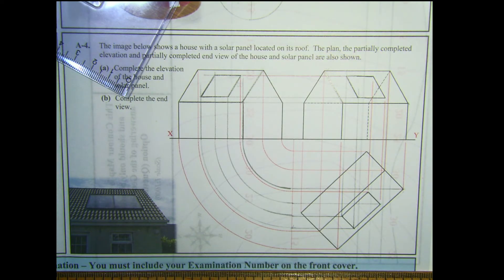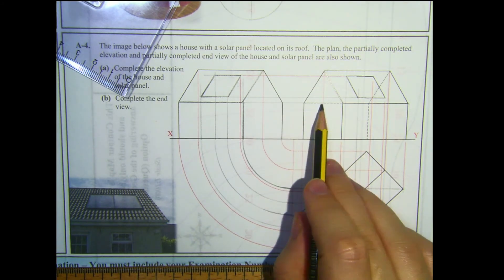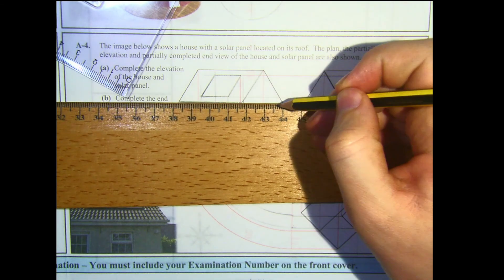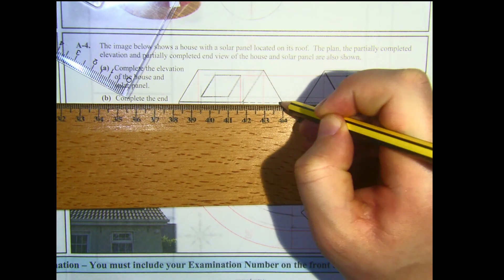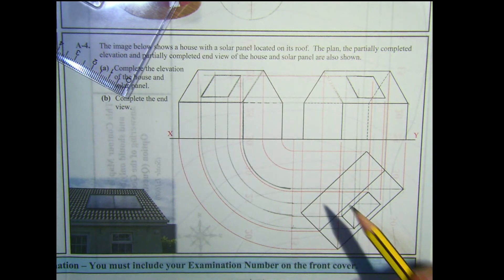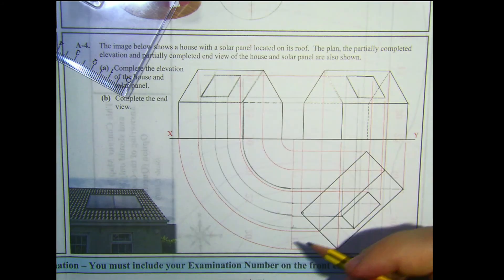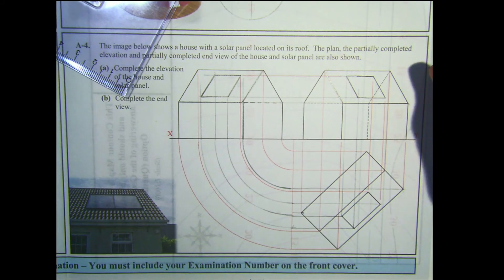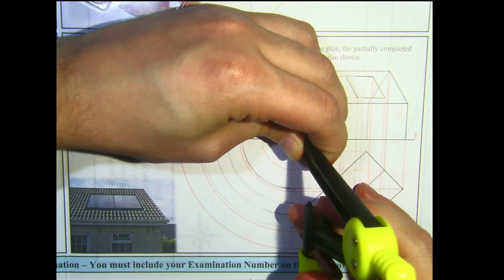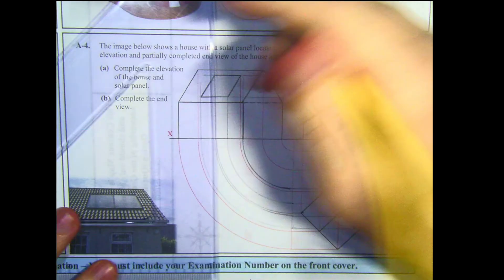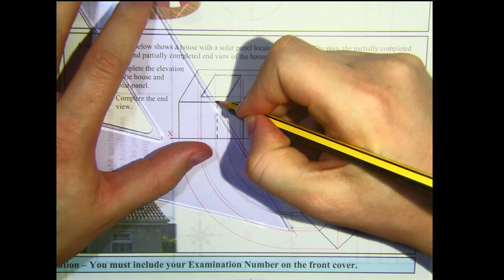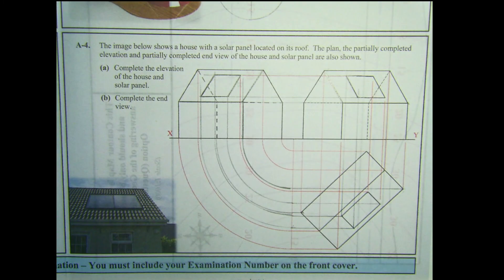A few other things needed are hidden detail lines. Just like we have hidden detail for the back edge — where the gutter is on the house — we're going to have hidden detail running across this part. We'll also have hidden detail for the back corner going straight down, and for the line sloping down at the back. Projecting this corner up into the end view gives a hidden detail line running up here, and a hidden detail line for the slope of the roof. That completes this question and section A from 2016.